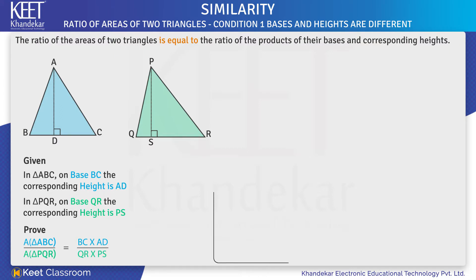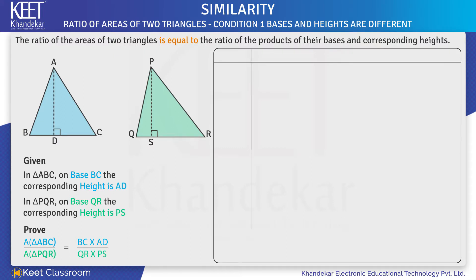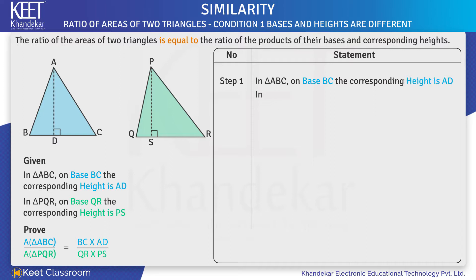Now let us write the proof. Step 1: In triangle ABC, on base BC, the corresponding height is AD. And in triangle PQR, on base QR, the corresponding height is PS.